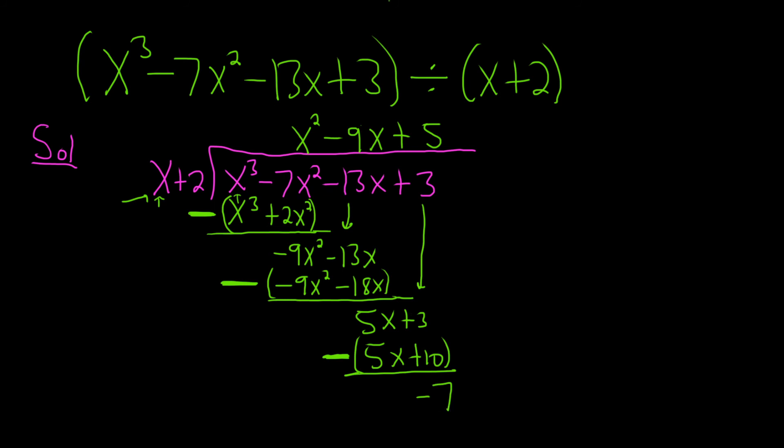Now we can write down our answer. So the answer is going to be this piece here. This is called the quotient. So x squared minus 9x plus 5. And then it's plus the remainder, which is this one here, negative 7 over the divisor, which is x plus 2.